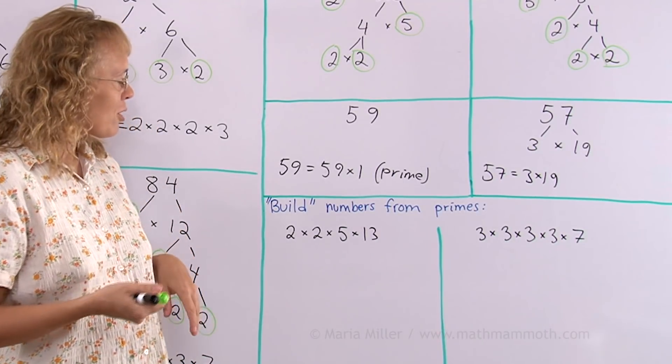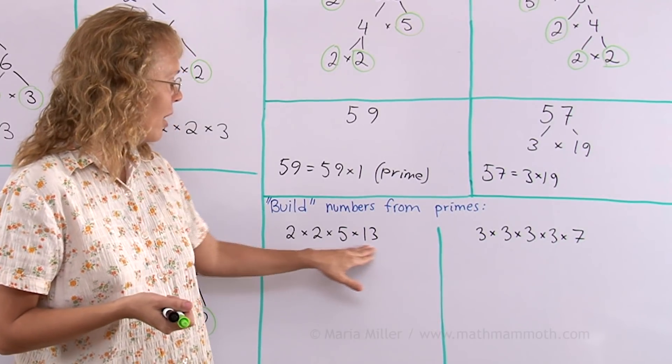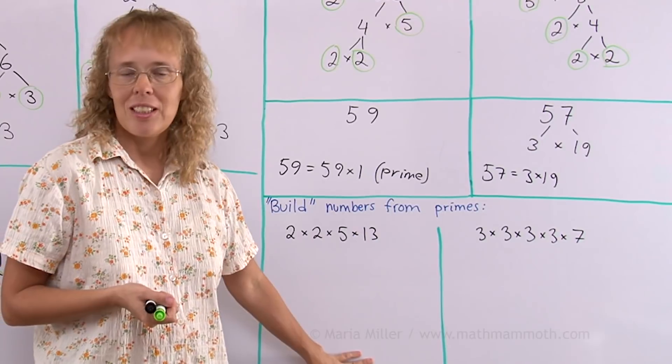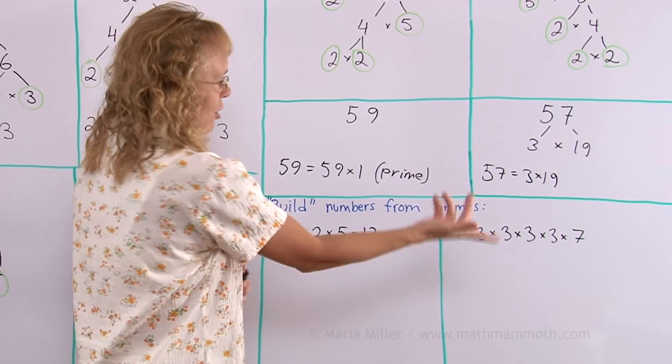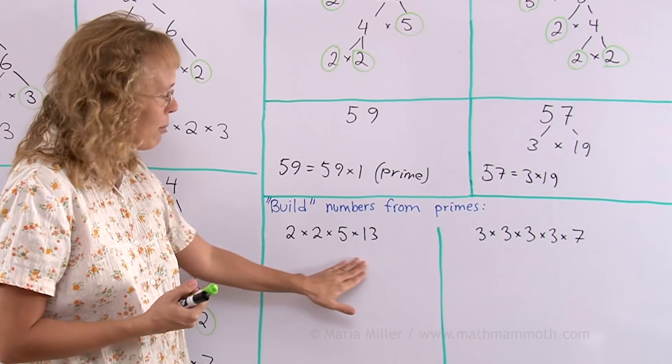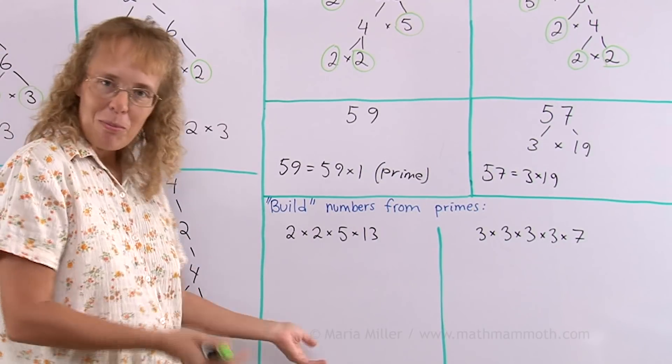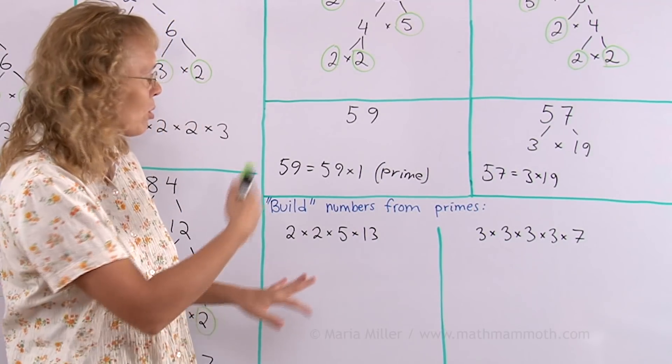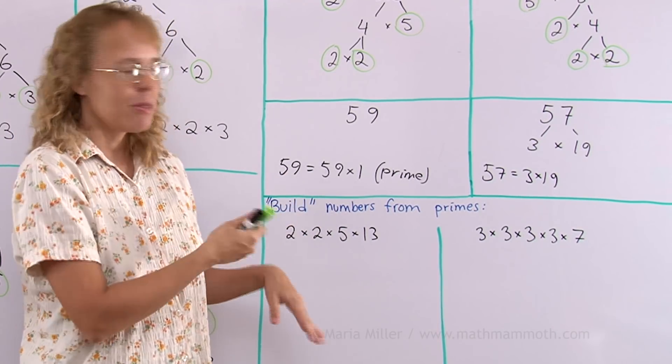So it follows that we can reverse the process of factorization and start with primes, the building blocks, and build some numbers. It's like the tree upside down now. I chose here a few examples. This is game-like too, because you can choose any primes you want. You can choose the same prime many times, and then see what kind of number you get as a result. Just choose 4, 5, even up to 10 primes, some different, some same, and see what number you get.